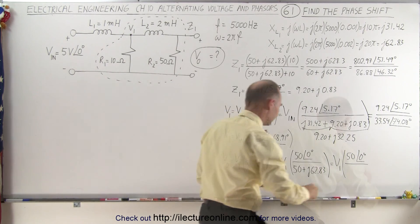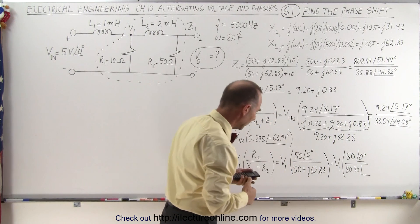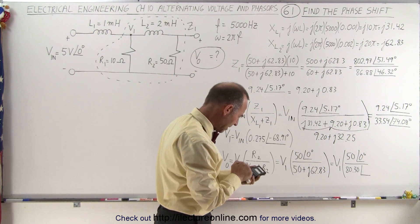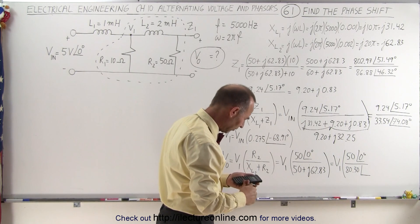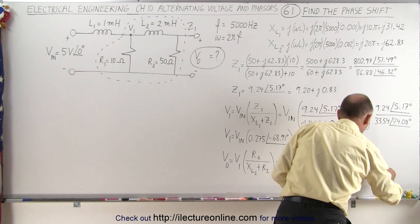Which is 80.30 with a phase angle of 62.83 divided by 50, take the inverse tangent, gives us 51.49 degrees.